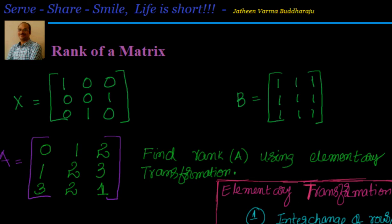If the determinant of the matrix is 0 and any 2x2 sub-matrix determinant is not equal to 0, then the rank is 2. If both cases fail — the determinant is 0 and all 2x2 sub-matrix determinants are also 0 — then the rank of the matrix is 1. Let's apply those concepts in simple examples and also go through elementary transformations.